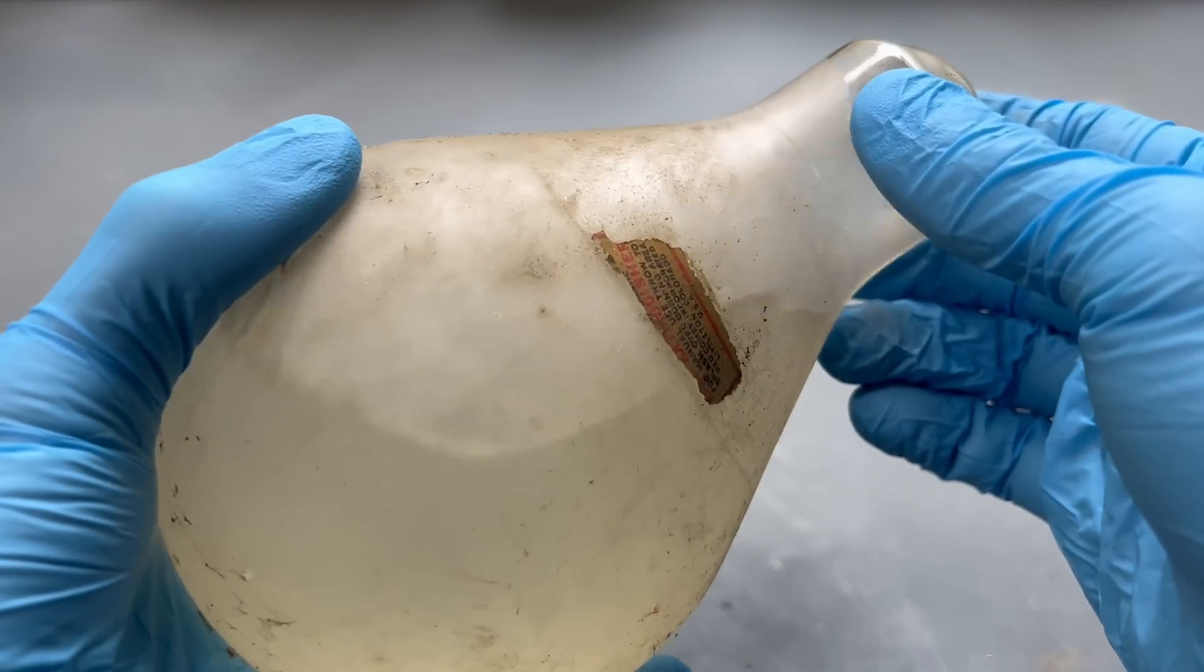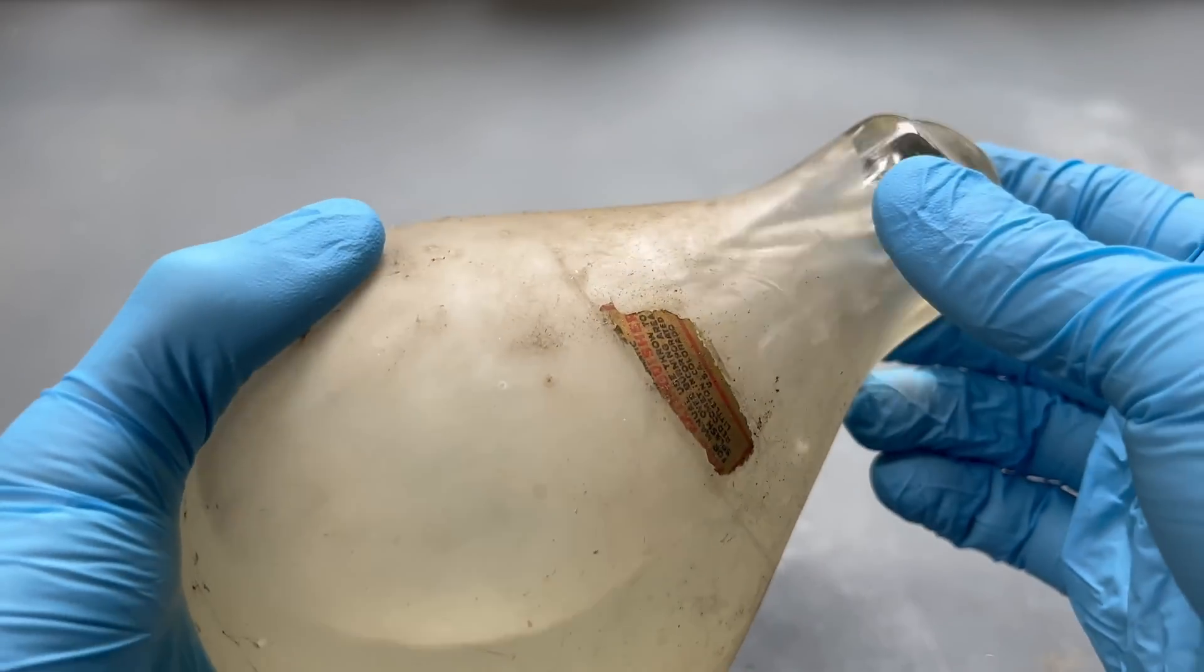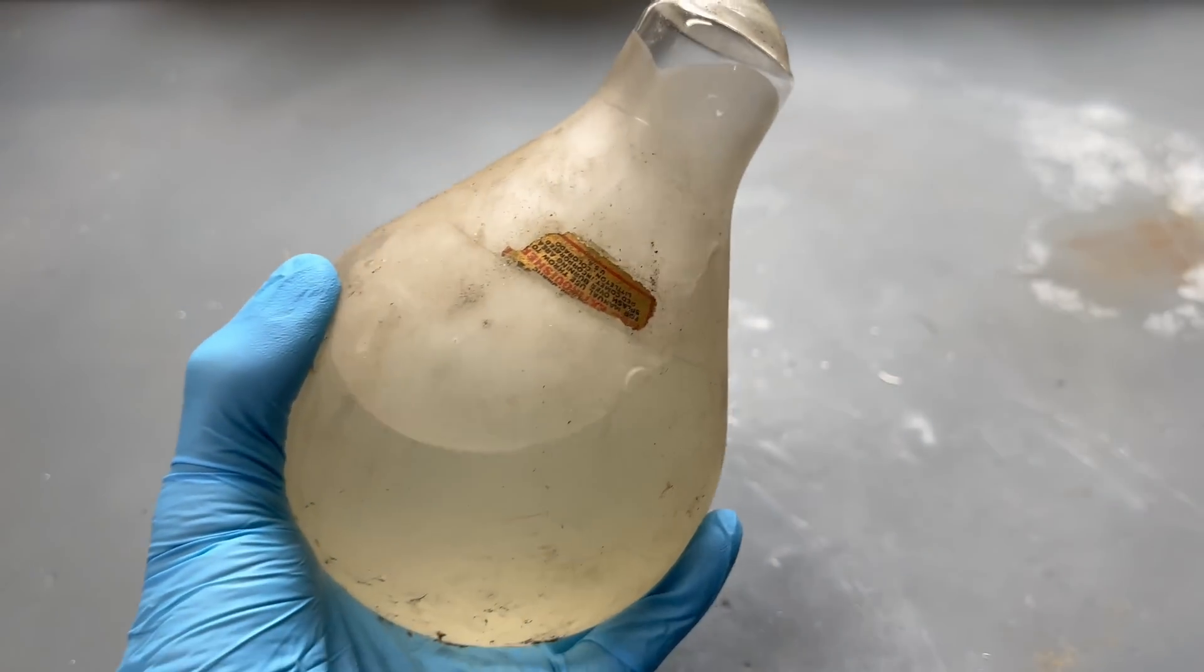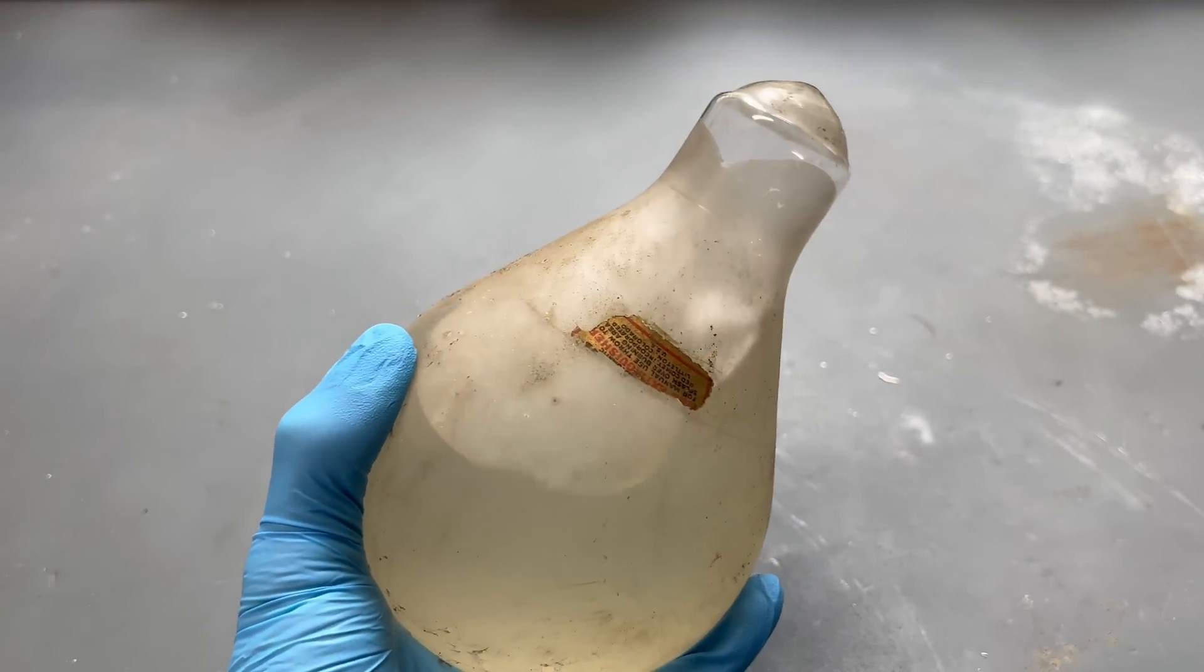Carbon tetrachloride was once a prevalent household chemical. Carbon tetrachloride was used in lava lamps, refrigerants, and fire extinguishers.